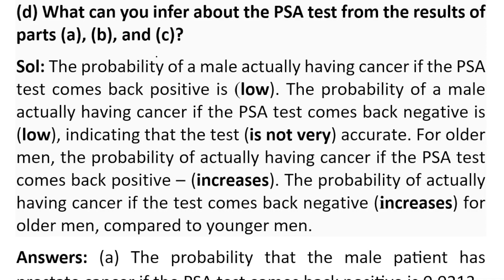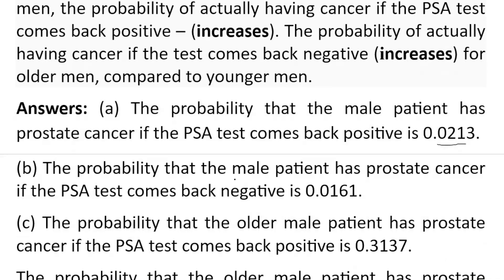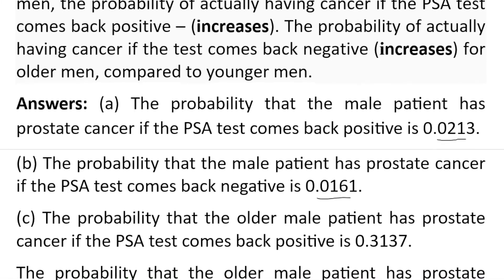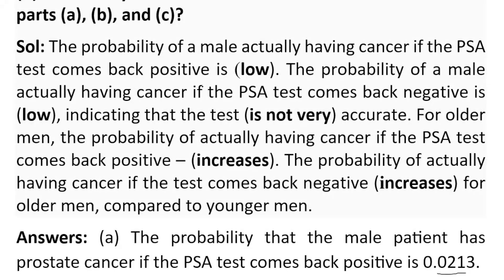Now we need to compare the results of Parts A, B, and C. The probability that a male patient has prostate cancer given that the test comes back positive is 0.0213, which is actually very low — it should be higher. In Part B, the probability that a male patient has prostate cancer given that the PSA test comes back negative is 0.0161, which is appropriately low. Because the positive result probability should be higher, we can say the test is not very accurate. For older patients, both probabilities in Part C increase significantly.